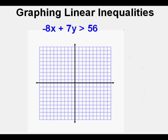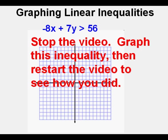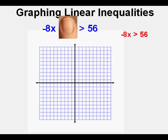Let's look at this one: negative 8x plus 7y is greater than 56. Remember that when it comes to graphing, it is helpful to say 'not equal to but greater than' so we keep in mind the type of boundary line we need to draw. Stop the video — I recommend getting out some graph paper and trying this one yourself. When you've finished, restart the video to see how you did. First, we cover the y term, leaving us with negative 8x is greater than 56. We solve for x by dividing both sides by negative 8. Since 56 divided by negative 8 equals negative 7, we mark negative 7 on the x-axis.